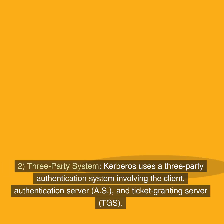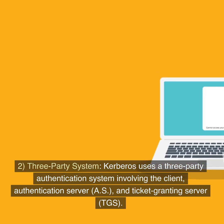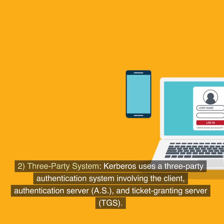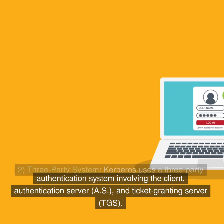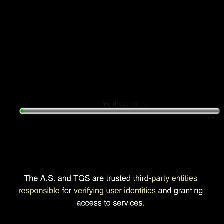2. Three-party system. Kerberos uses a three-party authentication system involving the client, authentication server (AS), and ticket-granting server (TGS). The AS and TGS are trusted third-party entities responsible for verifying user identities and granting access to services.